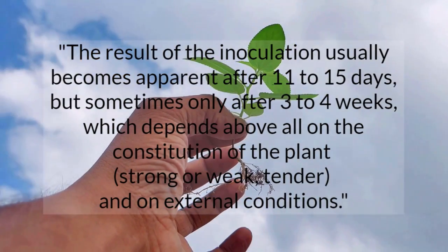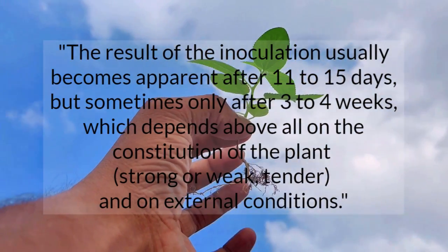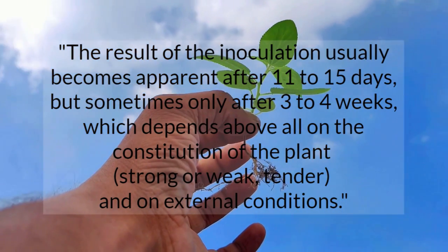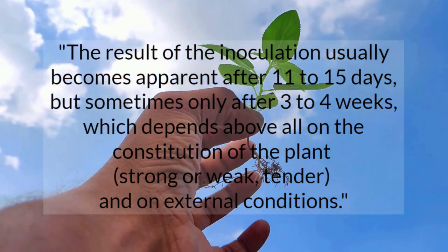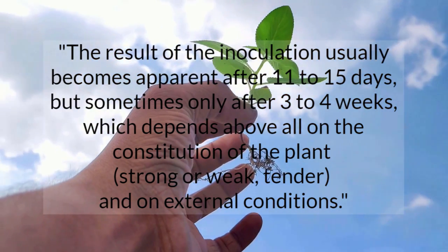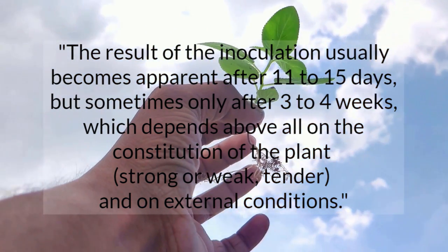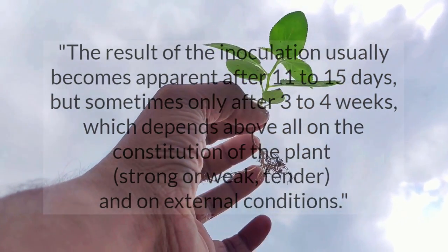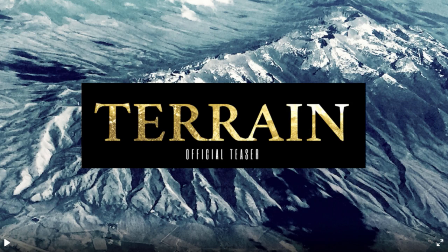He reports that the result of the inoculation usually becomes apparent after 11 to 15 days, but sometimes only after 3 to 4 weeks, which depends, above all, on the constitution of the plant — strong or weak, tender — and on external conditions. Here he identifies that the underlying health of the plant and various environmental conditions determine the degree to which the plant gets sick when it is mechanically traumatised.